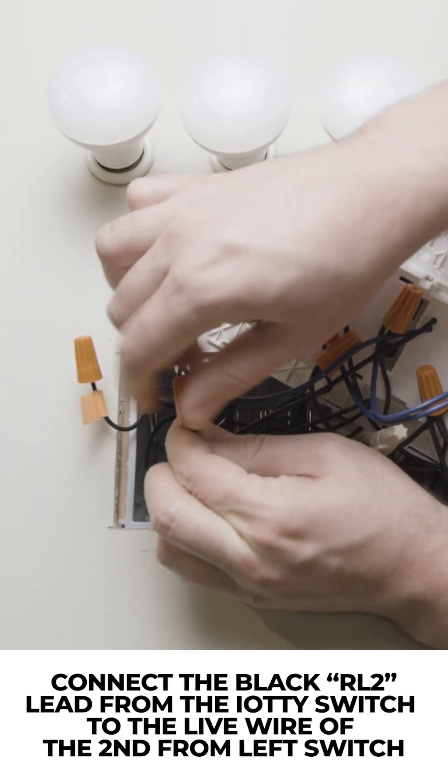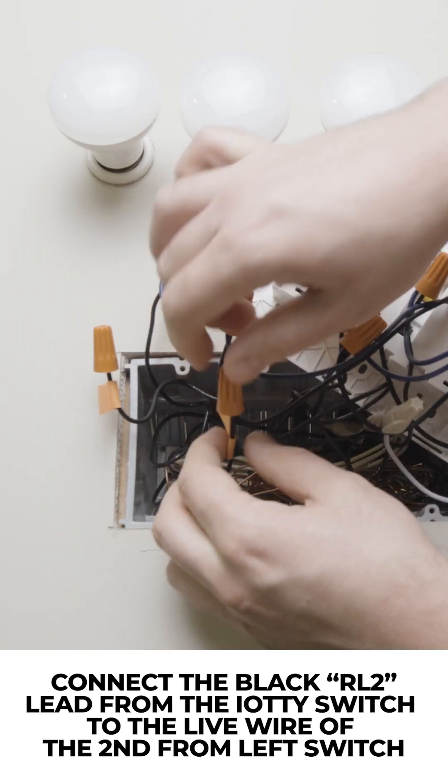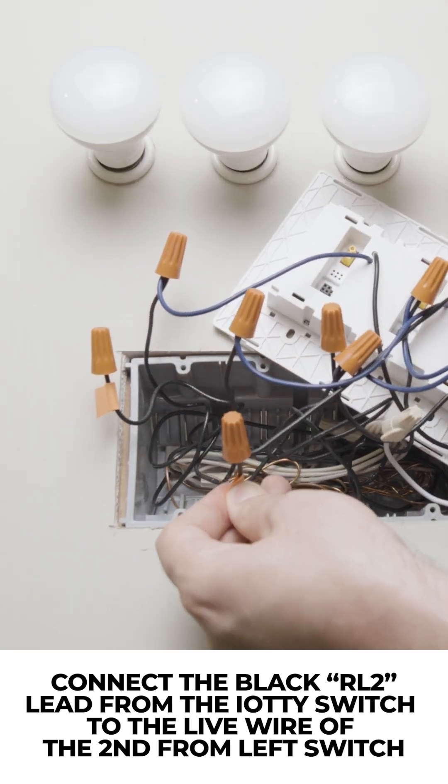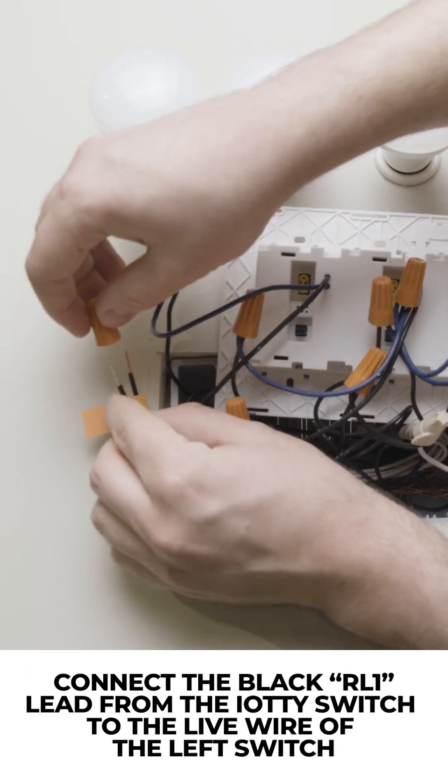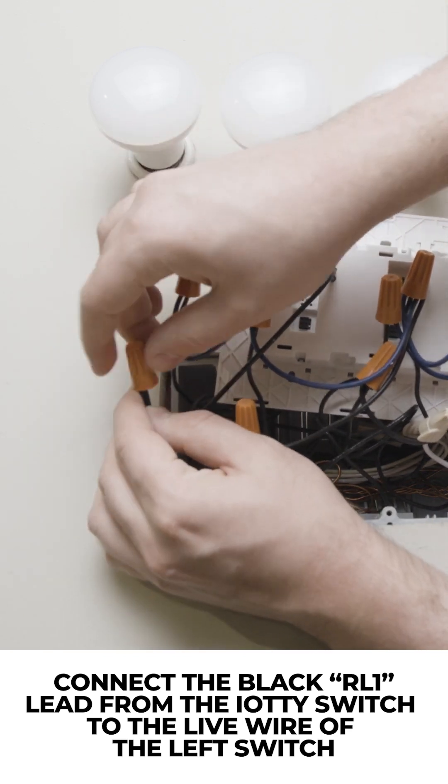Connect the Black RL2 lead from the IOTI switch to the live wire of the second from left switch. Connect the Black RL1 lead of the IOTI switch to the live wire of the left switch.